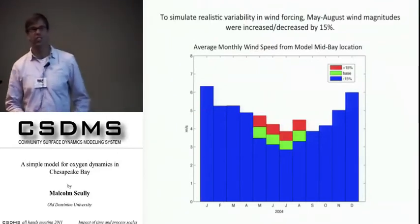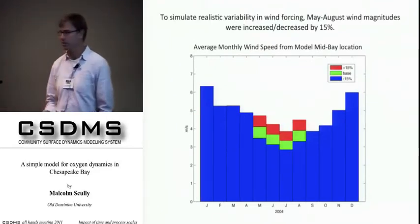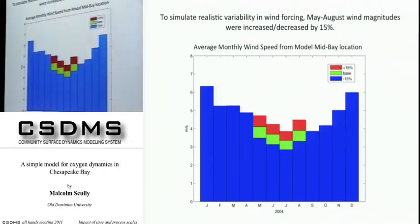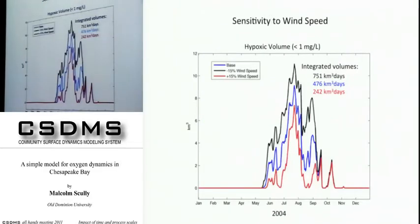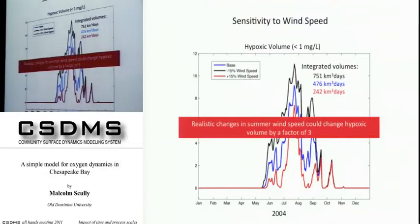For more realistic changes, I changed summer wind speeds by plus or minus 15%. Increasing summer wind speed by 15% produces a very big reduction in total hypoxic volume. Reducing summer wind speed by 15% produces a large increase. This is roughly a factor of three difference in observed hypoxic volume simply based on subtle changes in wind speed.